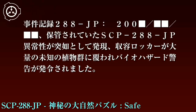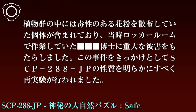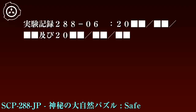事件記録288-JP：2000年月日。保管されていたSCP-288-JPの異常性が突如として発現。収容ロッカーが大量の未知の植物群に覆われ、バイオハザード警告が発令されました。植物群の中には毒性のある花粉を散布していた個体が含まれており、当時ロッカールームで作業していた博士に重大な被害をもたらしました。この事件をきっかけとして、SCP-288-JPの性質を明らかにすべく再実験が行われました。